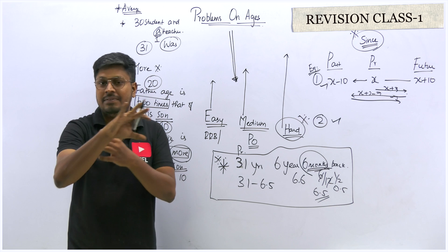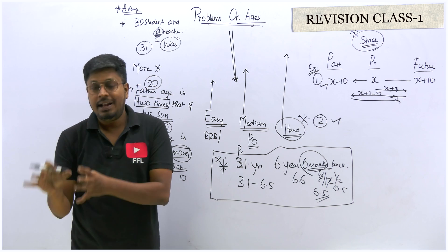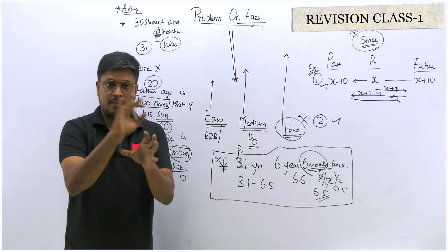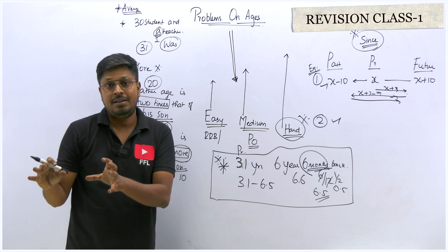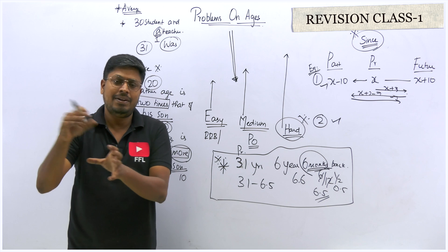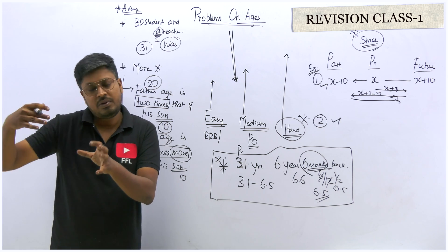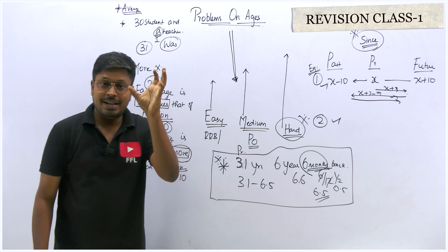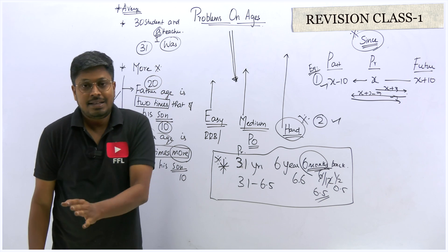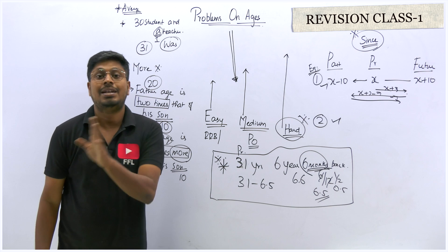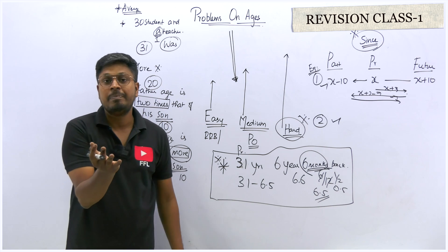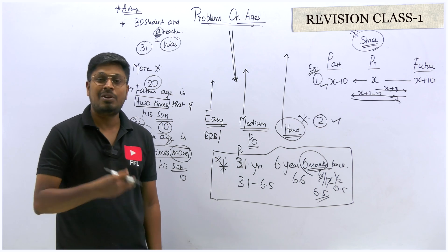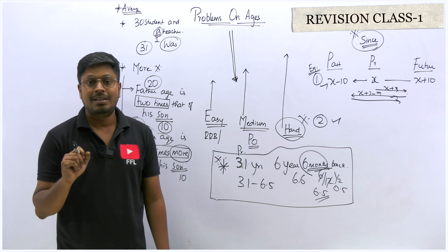Also, when a question is based on father and son throughout, at the last it will ask for the ratio of son and father. We might have found 3:4 for father and son, and we see that option and go with it, but the question actually asks for son and father. So we have to interchange the ratio. Keep on solving more and more questions so you won't make these mistakes in the exam.